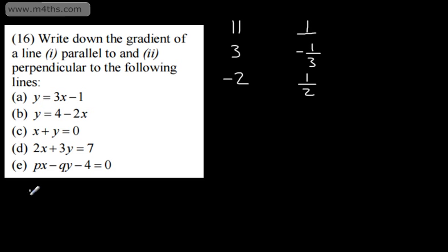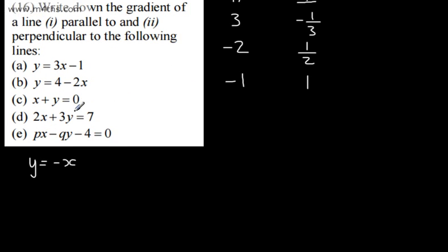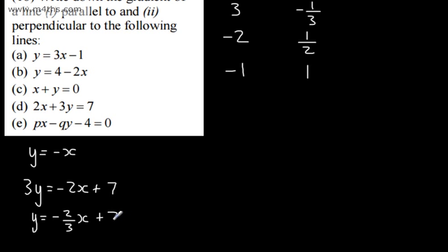Rewriting one line as y = negative x, by subtracting x from both sides, the gradient is negative 1, so the parallel gradient is negative 1 and the perpendicular is positive 1. Rearranging the next one: 3y = negative 2x + 7, then dividing by 3 gives y = negative two thirds x + seven thirds. The gradient is negative two thirds, so the parallel gradient is negative two thirds and the perpendicular is positive three over two.